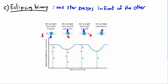So we end up with two uneven dips in the light curve — one dip going down a certain amount, and another dip going down even more, because the two stars contribute different amounts of light. When we see these uneven, periodic dips — one after another, repeating — we can conclude this is an eclipsing binary situation.